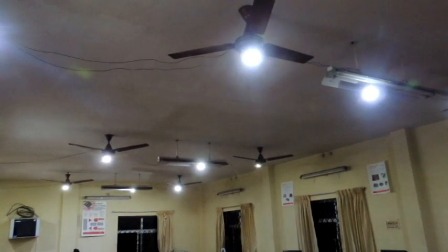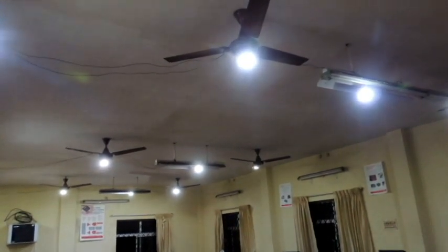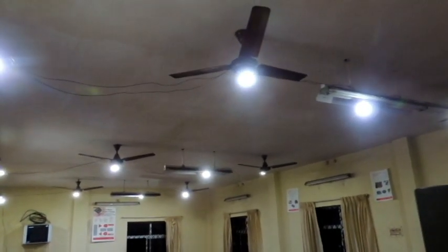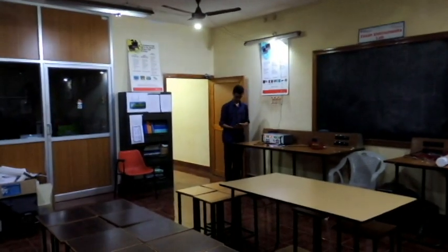In order to demonstrate the indoor navigation system in real world, we installed the 12 VLC bulbs in our lab at the same height as the existing light bulbs, forming a 3x4 matrix. The arrangement of the bulbs is as shown. We conducted a trial by having a user come into the room and use the receiver to navigate to a destination of his choice.